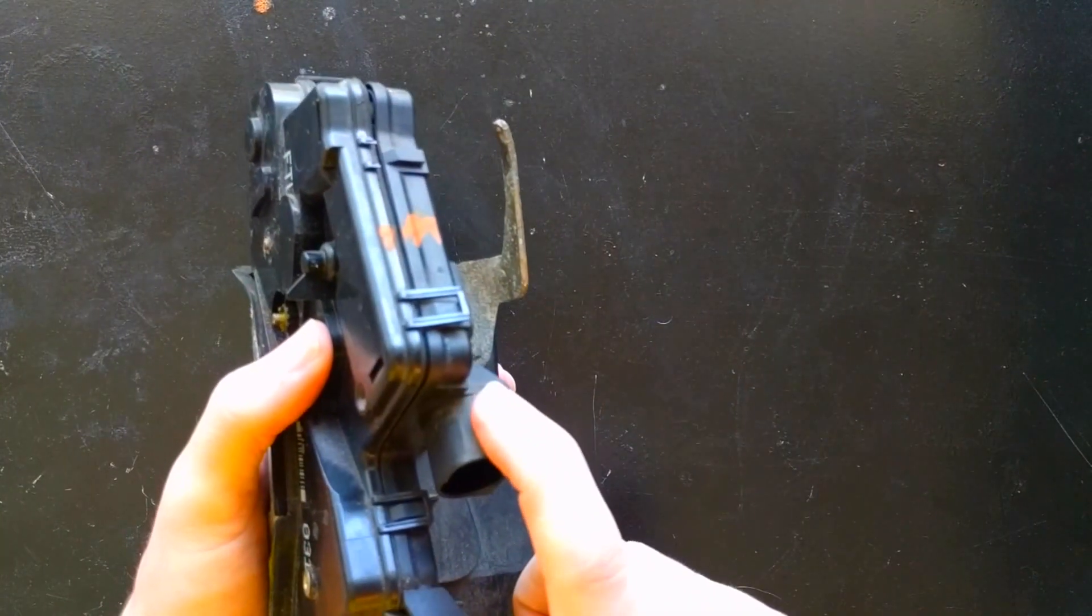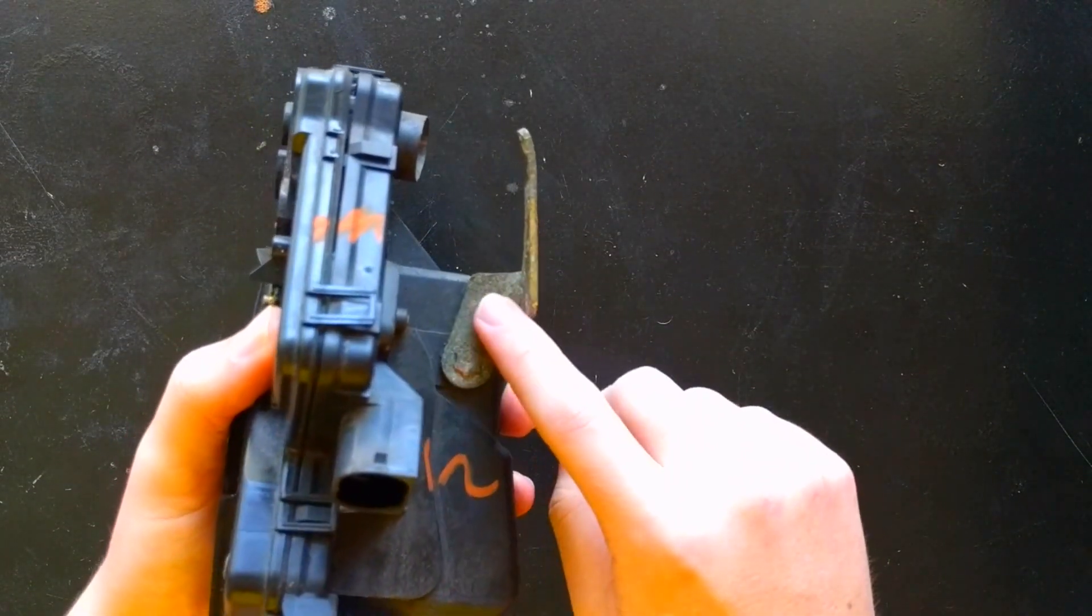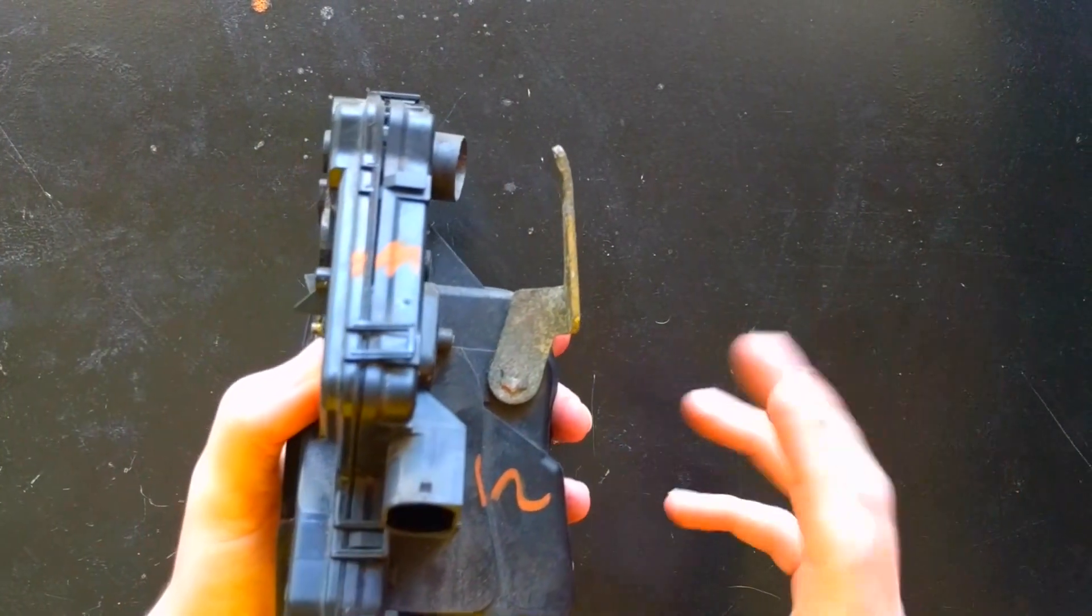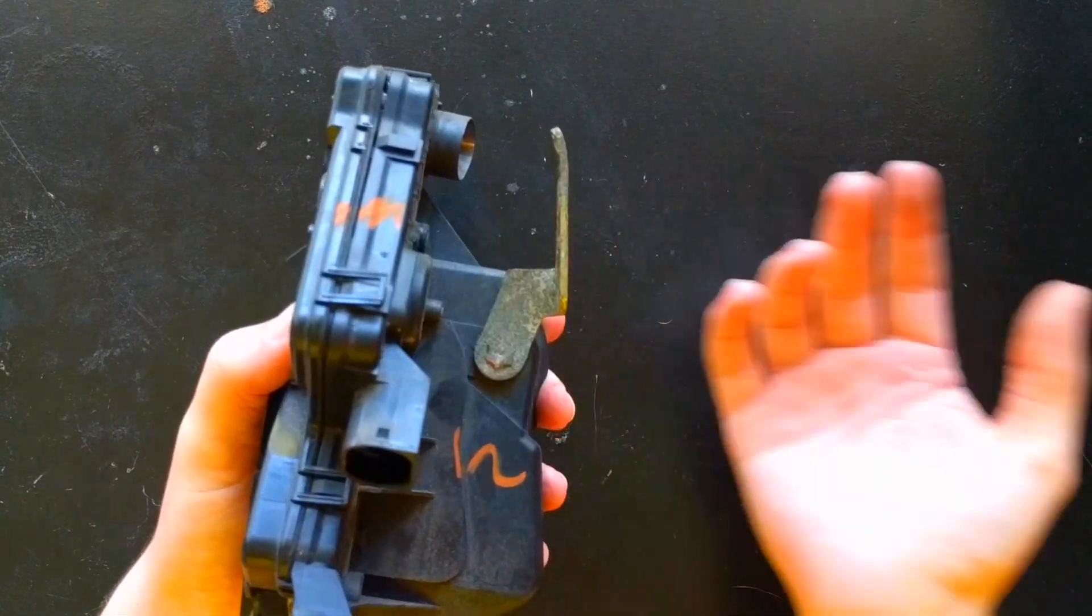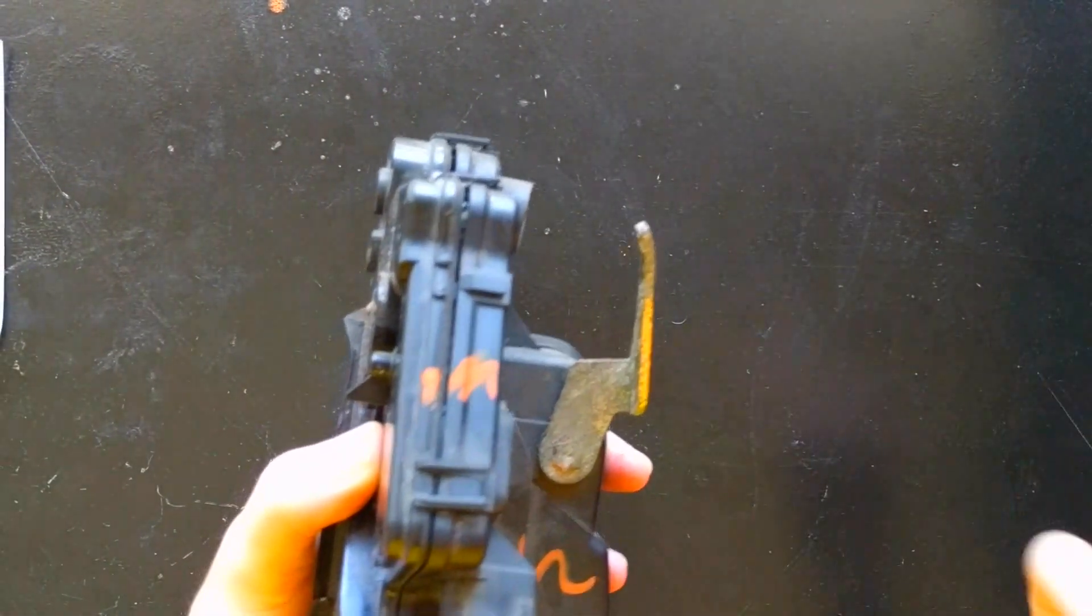Now the only difference between this actuator and the newer style is this piece here. There are some models, like the CI models, I think have a different actuator altogether. But the regular models are mostly the same as this one. I was only able to find the old style in the junkyard, so I had to fix mine and mine in 2003.